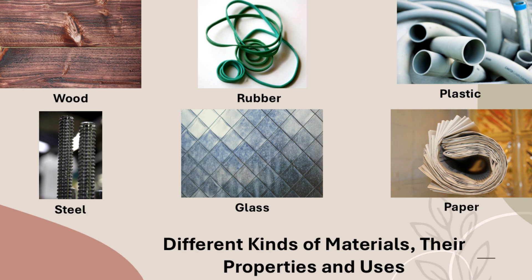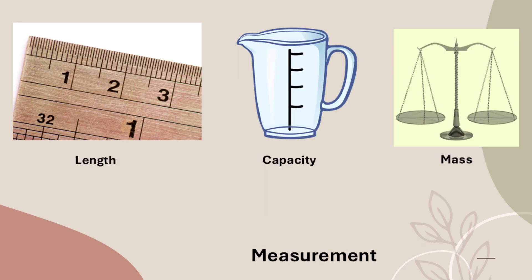Now, coming to measurement. Measurement is the process of measuring something. We need measurements to measure the distance from one place to another, the height of a person, the length of a piece of cloth, or the quantity of milk, etc. A unit is a fixed quantity that is used as a standard of measurement.